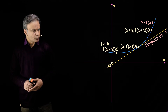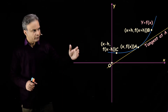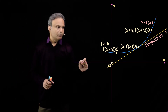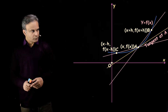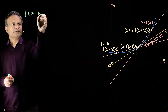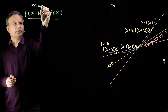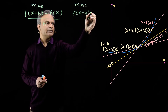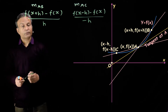Now consider two points b and c. Point b is to the right of a having coordinates (x+h, f(x+h)), and point c is to the left of a having coordinates (x−h, f(x−h)). The slope of line AB is [f(x+h) − f(x)] / h, and the slope of line AC is [f(x−h) − f(x)] / (−h), using the two-point form of slope.